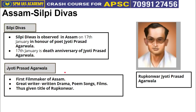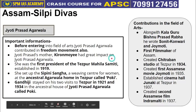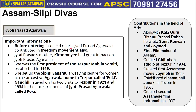Jyoti Prasad Agrawala was the first filmmaker of Assam and a great writer — he wrote drama, poems, and films, earning him the title of 'Roop Konwar.' Before entering the field of arts, he also contributed to the freedom movement. His mother, Kiran Moy, had a great impact on him — she was the first president of the Tejpur Mahila Samiti established in 1919.